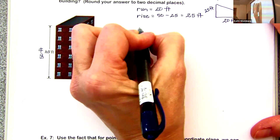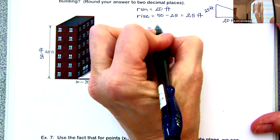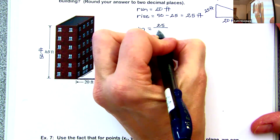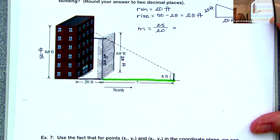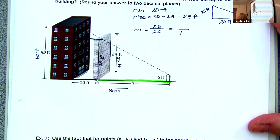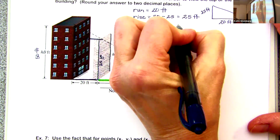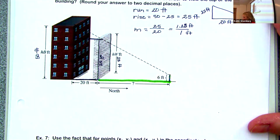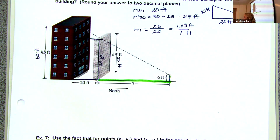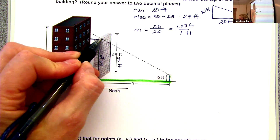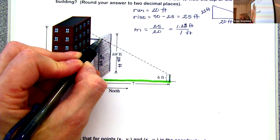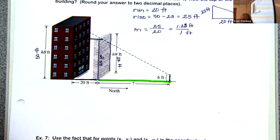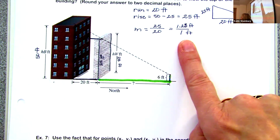This allows us to find the slope: rise over run = 25/20 = 5/4 = 1.25. So slope = 1.25 feet per foot. The slope of the line of sight remains 1.25 over 1 all the way from the building to the man.